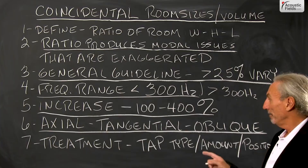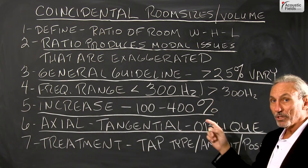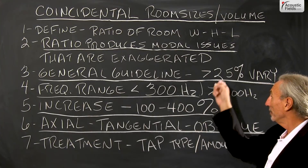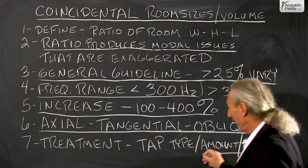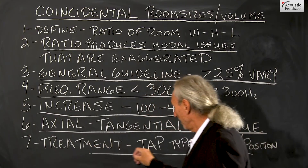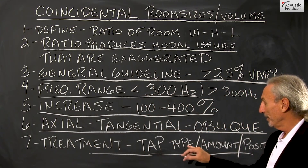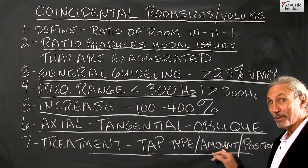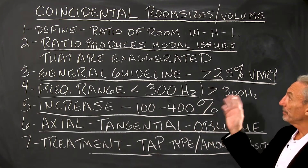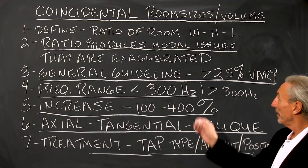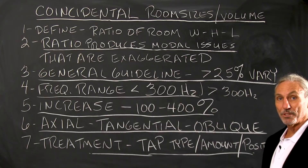Be very careful when choosing a room not to get ratios and sizes that are too close to each other. Try to vary them by at least 25%, because that will influence — remember our acronym TAP — the type of treatment you're going to use, the amount you're going to use, and where you're going to put it. I hope that helps. Coincidental room sizes and volume: try to vary the dimensions of your room by at least 25% to start.